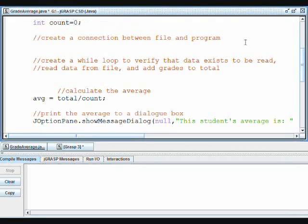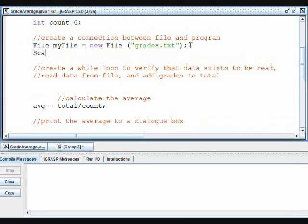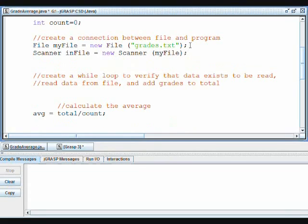Now we need to create a connection between the file and the program. To do this, we will create a file object, myFile equals newFile, and it will be accessing grades.txt. We will also create a new scanner object, and we're going to call this inFile instead of the normal keyboard because we will be using scanner to read from a file. And instead of passing system.in to scanner, we will be passing myFile so that it will read from the file.